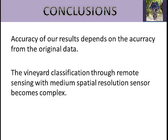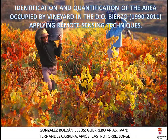As a conclusion, an outstanding factor determining the accuracy of our results depends on the accuracy of the original data. Vineyard classification through remote sensing with medium spatial resolution sensors becomes complex because most pixels will be heterogeneous — in a vineyard, the main part of the surface belongs to arable soil and only a minor part to the vine plant, which complicates correct vineyard identification. In this case, we think it would be interesting to use a different sensor instead of Landsat to get better results for a suitable identification of vineyards. We would like to thank you for your attention.